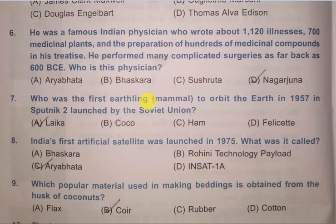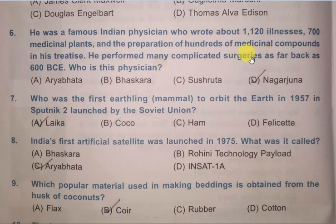Next question: He was a famous Indian physician who wrote about 1120 illnesses, 700 medicinal plants, and the preparation of hundreds of medicinal compounds in his treatise. He performed many complicated surgeries as far back as 600 BCE. Who is this physician? Options: Aryabhatta, Bhaskara, Sushruta, Nagarjuna. The correct answer is Sushruta.